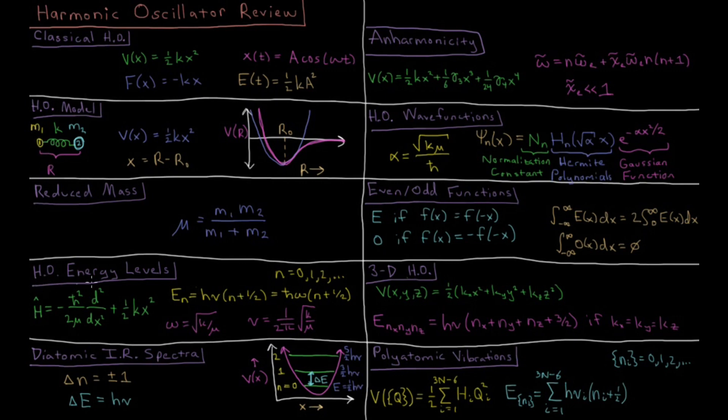When we want to solve the system at a quantum mechanical level, we need to define a Hamiltonian. We have our kinetic energy term minus h bar squared over 2 mu times second derivative with respect to position, plus one half kx squared, our potential energy term.